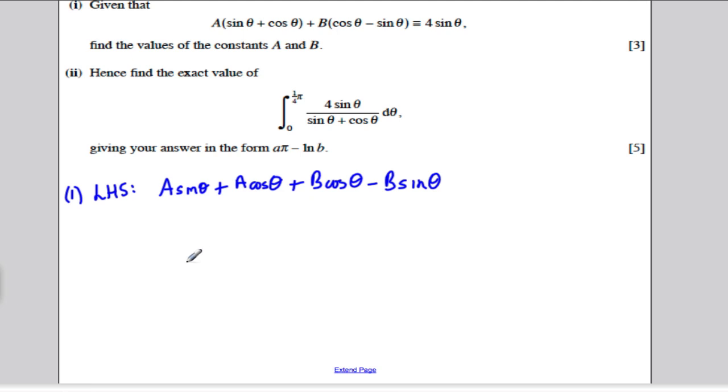plus A cos theta plus B cos theta minus B sine theta. And taking how many sine theta we've got, well, how many sine theta do we have? Sine theta, factorising sine theta from here and here, we've got A minus B lots of sine theta.